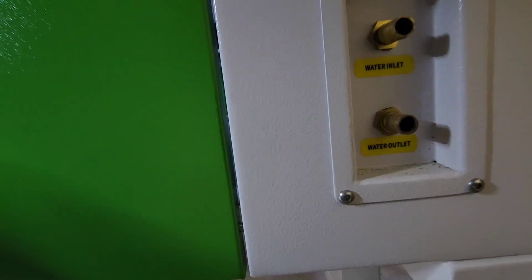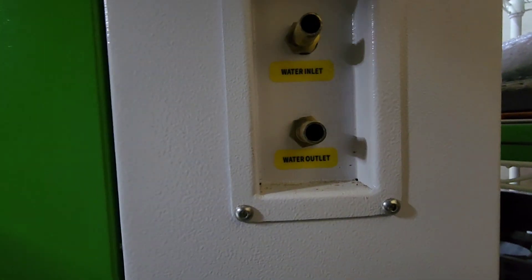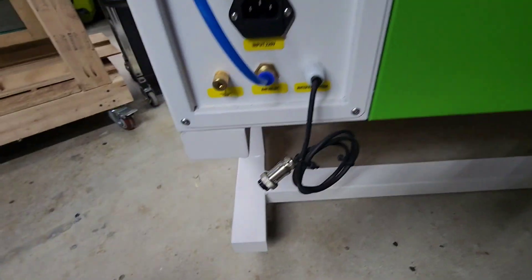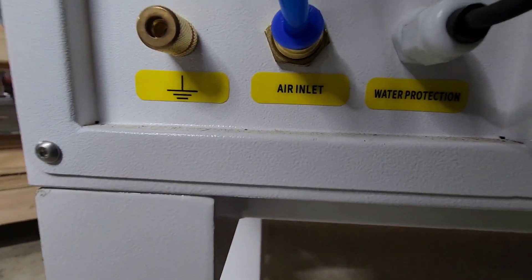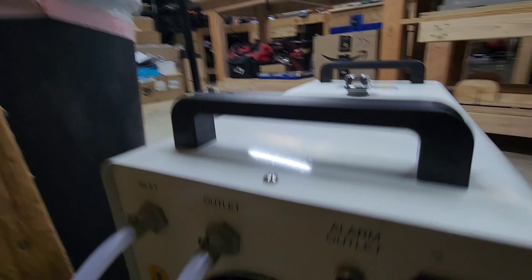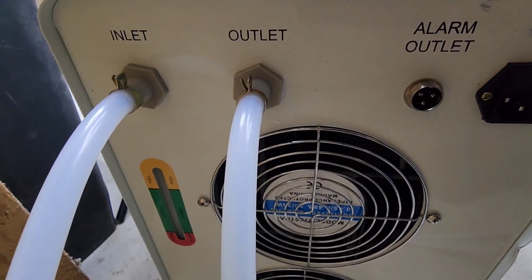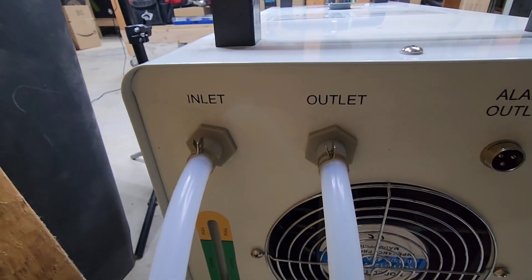Here we are on the back of the unit. This is the CO2 unit. You have at the top the water inlet and the water outlet at the bottom on the two barbs. Also on this side, we have the water protection cable which I'm going to also connect to the back of the chiller alarm outlet. We have the inlet and the outlet on the right, inlet on the left, outlet on the right. We're going to go ahead and connect these two.